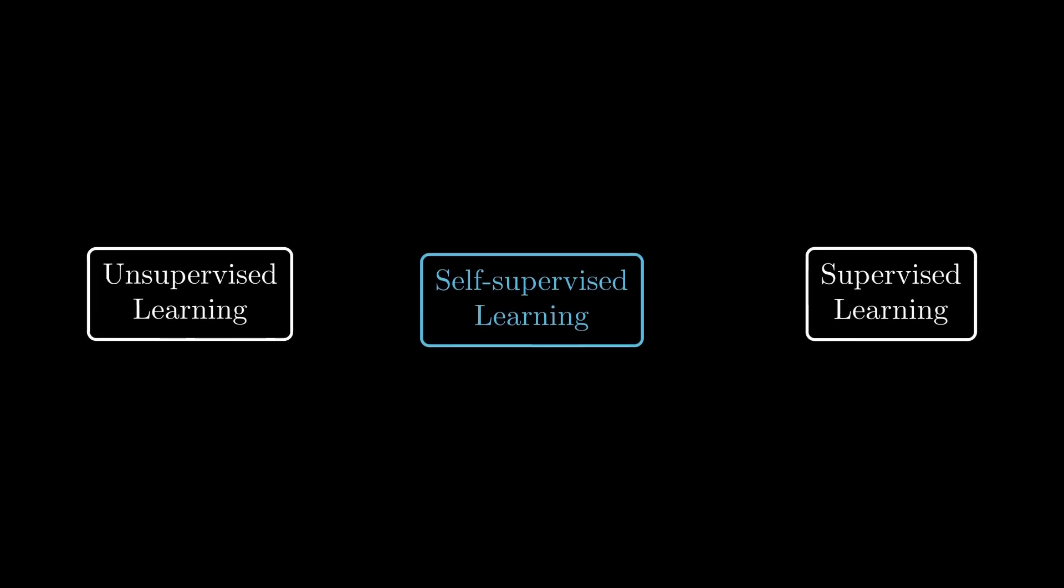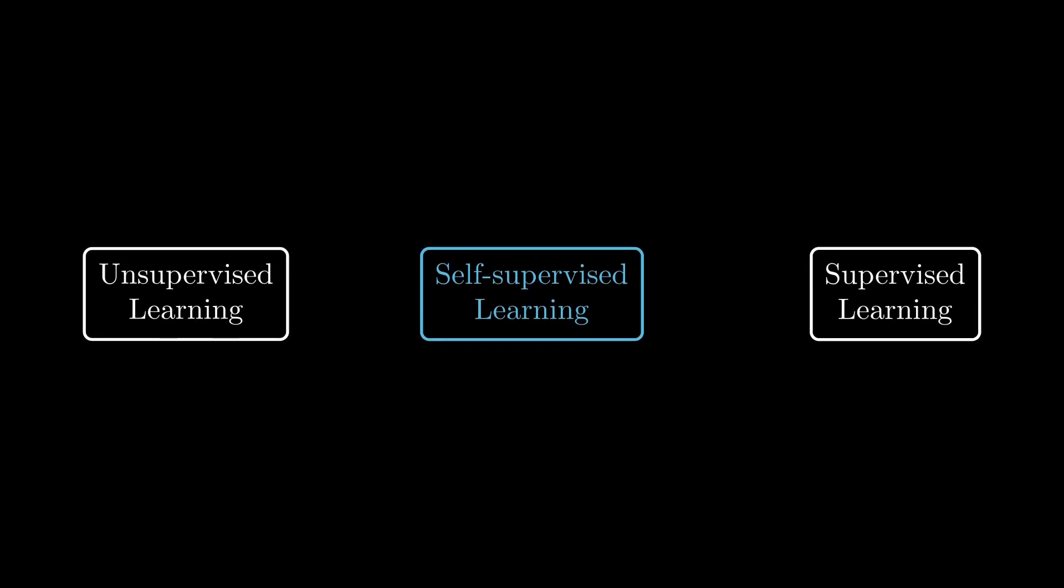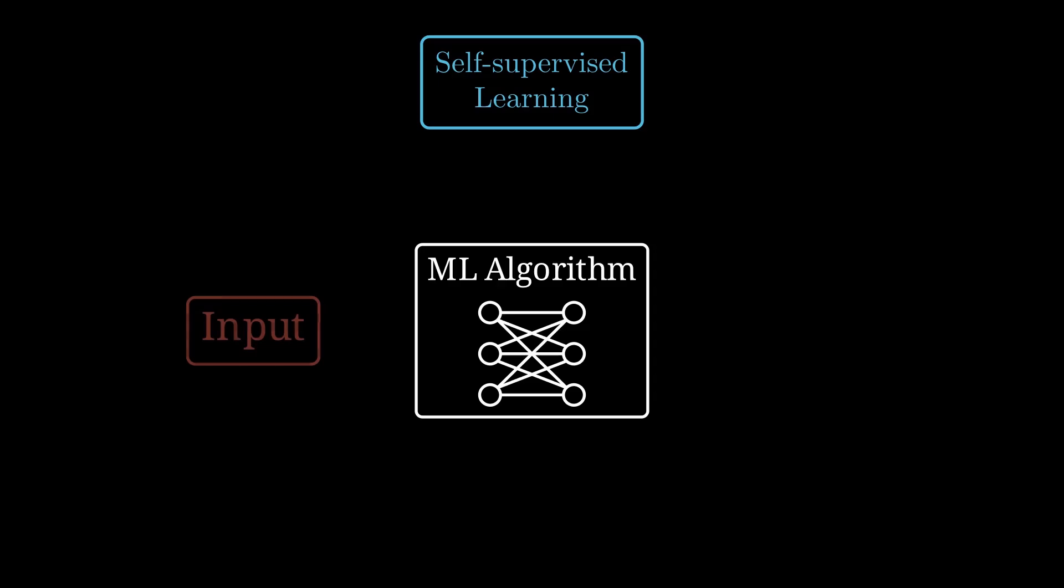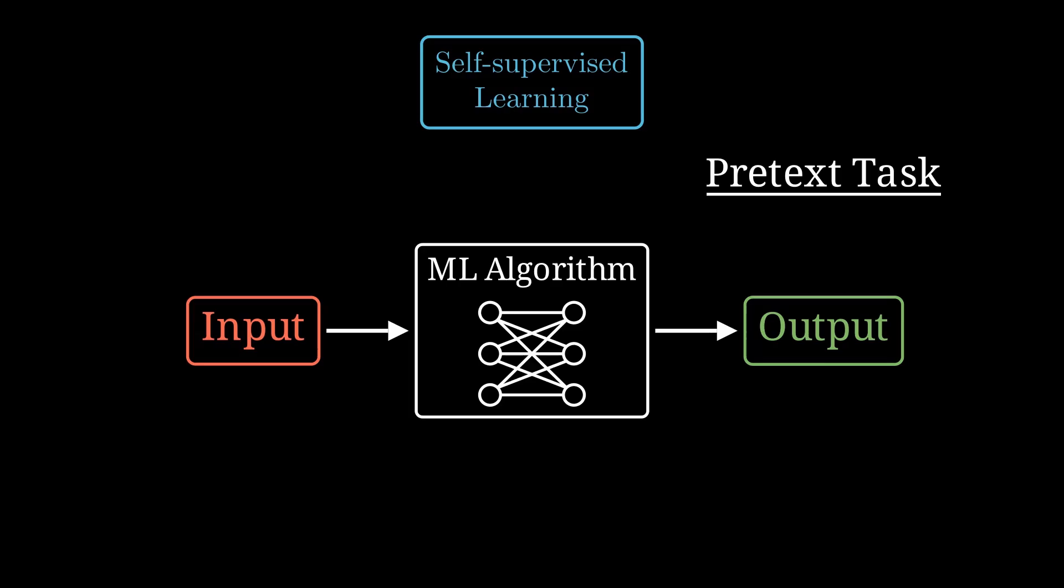While supervised and unsupervised learning are nice, there's another approach that's somewhere in between, called self-supervised learning. In self-supervised learning, we create a pretext task from the data itself, and this task should not require any additional labels to evaluate the model's performance.